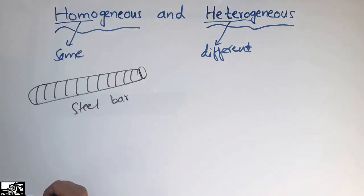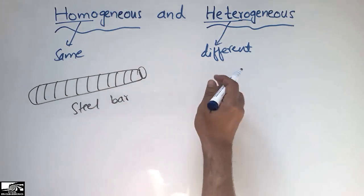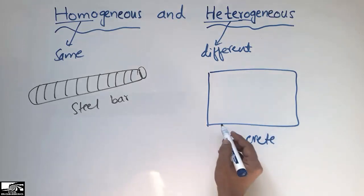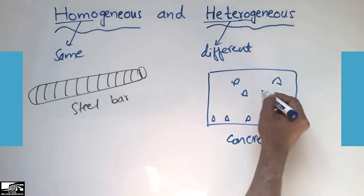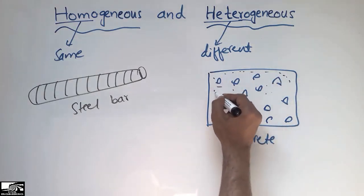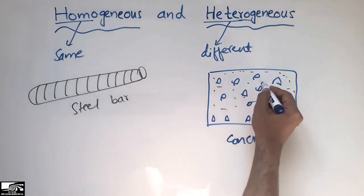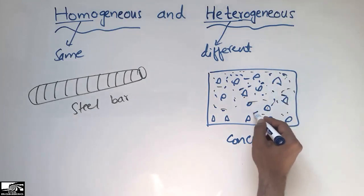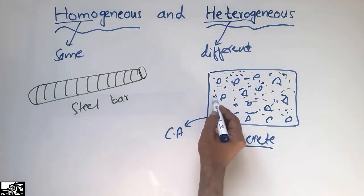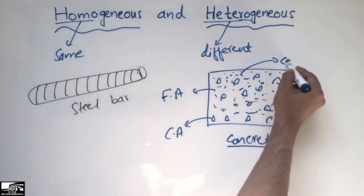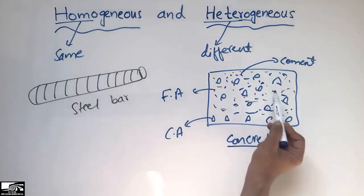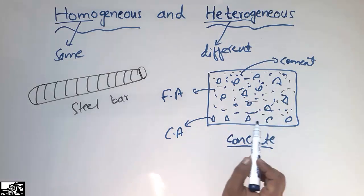Heterogeneous material is one in which there are different materials used throughout its composition. For example, consider concrete. Throughout its composition there are coarse aggregates, fine aggregates such as sand, and also cement. The composition of this concrete is not the same — it is made of coarse aggregate, fine aggregate, and cement. It does not have uniform composition or the same appearance; different materials are used, which is why it is called a heterogeneous material.